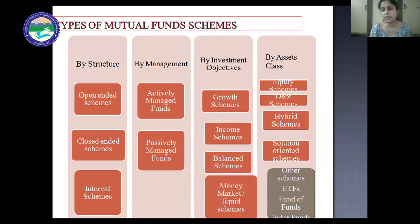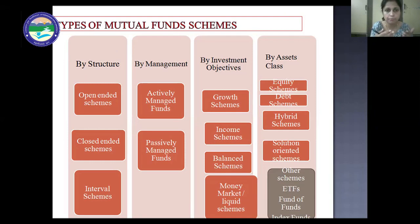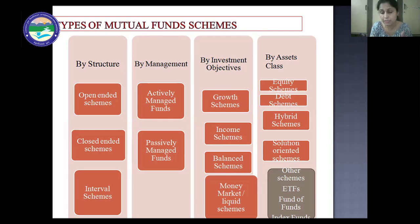In India, there are 3,500+ mutual fund schemes available. Investors select schemes according to their risk profile, investment objective, or time horizon. Schemes are classified: by structure — open-ended, close-ended, and interval schemes; by management — actively managed and passively managed; by investment objectives — growth, income, balanced, and money market/liquid schemes; and by asset class — equity, debt, hybrid, solution-oriented, and other schemes including ETFs, fund of funds, and index funds.